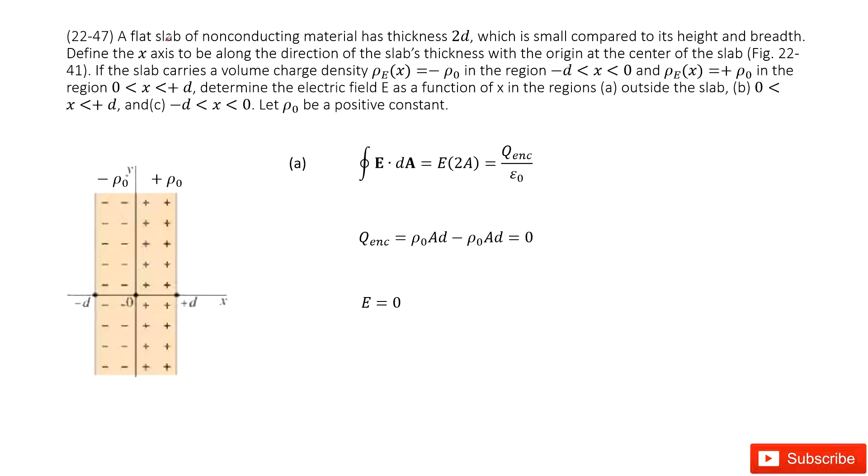We can see we have a flat slab. Keyword: non-conducting. Non-conducting tells us the charge is uniformly distributed in this object. The thickness is 2d. Now, we need to determine the electric field in different locations.